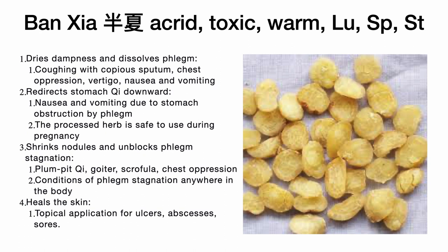The processed herb is safe to use during pregnancy for nausea, provided the presentation is primarily cold — that is, the tongue has no red spots and the pulse is not rapid. Ban Xia also shrinks nodules and unblocks phlegm stagnation — for plum-pit qi, a sensation of something stuck in the throat, goiter, scrofula, and chest depression. Generally, Ban Xia can treat phlegm stagnation anywhere in the body.